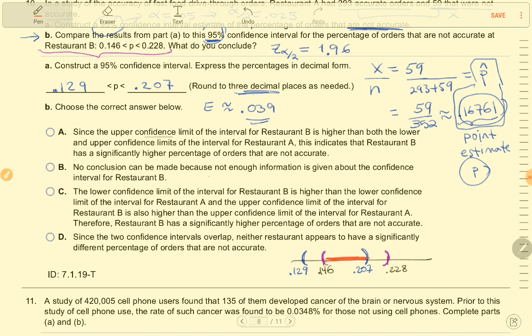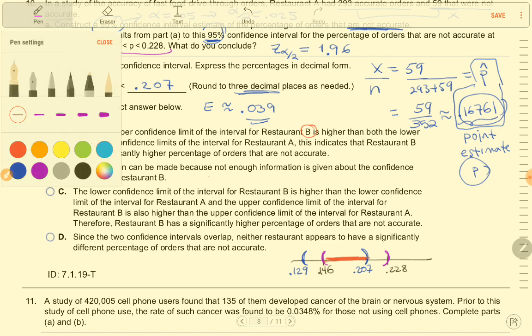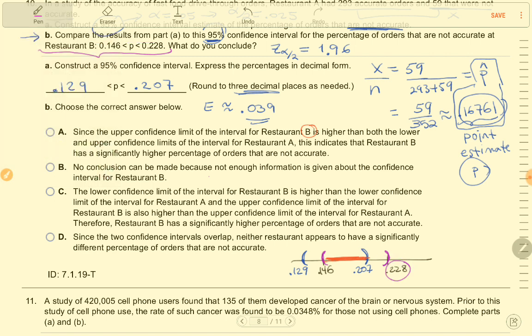I'll read answer A again. Since the upper confidence limit of the interval for restaurant B is higher than both the lower and upper confidence limits, this indicates restaurant B has significantly higher. No, the entire purple region needs to be above the blue region in order for us to conclude that they are significantly different. So this is not the correct answer.